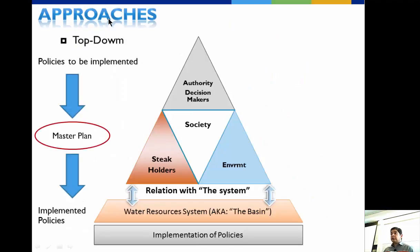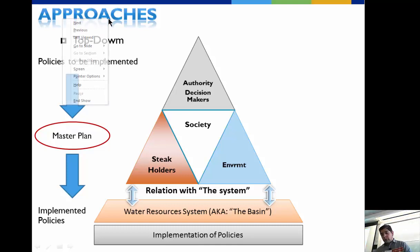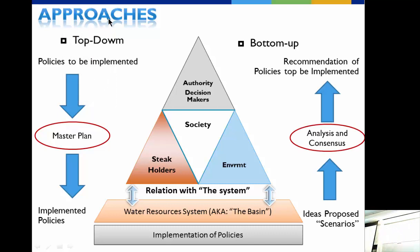There are basically two approaches. The top-down approach — common in the 1950s through 1970s — is where the authority, like the Department of Water Resources, develops a master plan and tells users how to operate water infrastructure. The bottom-up approach involves stakeholder rules, where local people define what they need: whether they need an extra water treatment plant, whether they need to bring in additional water sources.